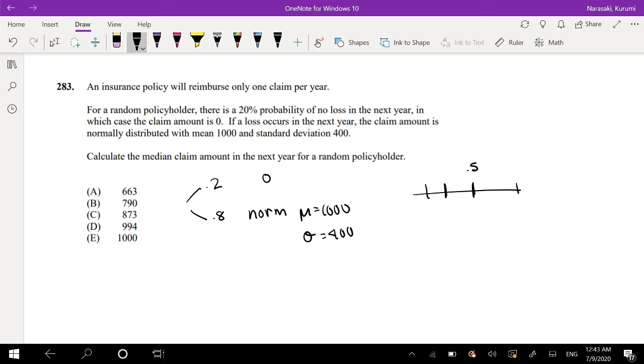But we already know that 20% of it is already 0 and we just have to figure out what the 0.3 is. We know that the 0.3 is normally distributed, right? So we have to scale our normal distribution.